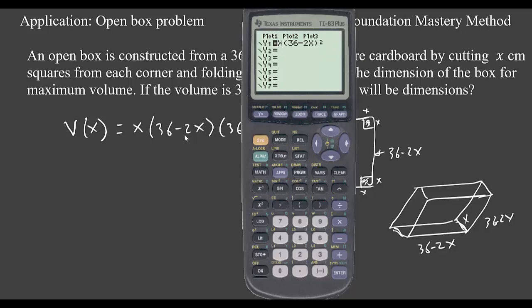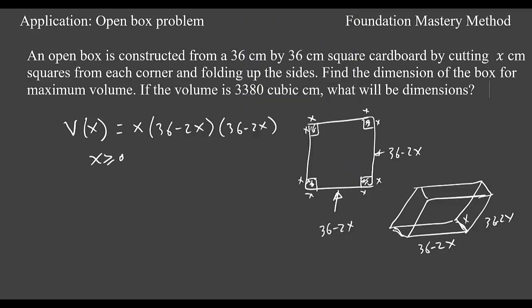You can easily see that the practical domain will give you x needs to be greater or equal to 0, and from here 36 minus 2x needs to be greater or equal to 0, meaning x should be less or equal to 18. So we say practical domain will be x is greater or equal to 0, x is less or equal to 18 coming from here.